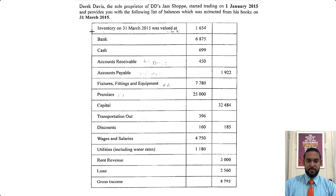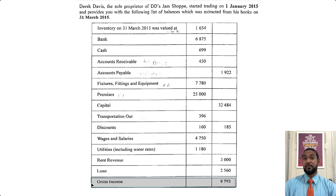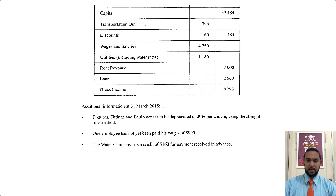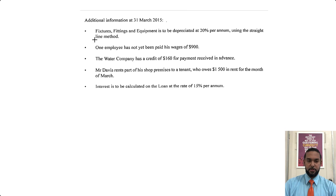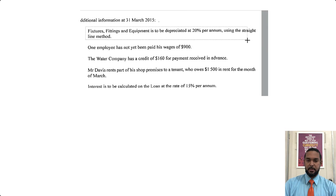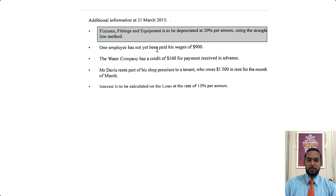We have quite a bit of information here. Look at this — they give us gross income, so we don't actually have to do sales less cost of goods sold. They've started us off with the gross profit. How kind of them! Let's check out the additional information.